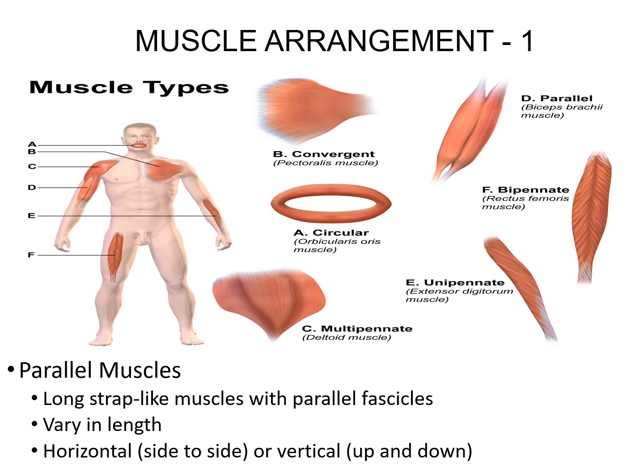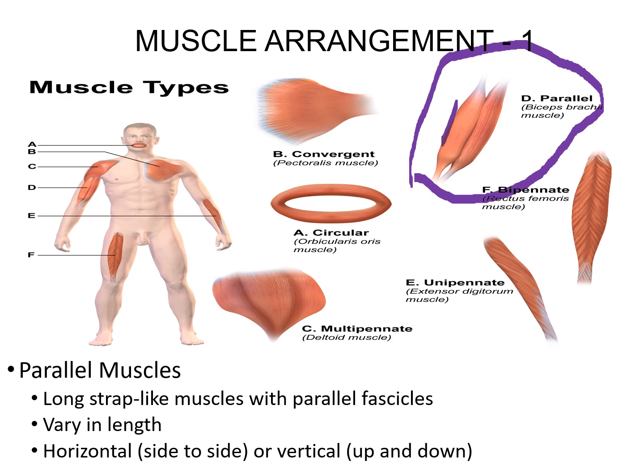We can classify muscles based on the overall shape, like the deltoid, or based on the arrangement of the fascicles and fibers. The parallel type of muscle arrangement is seen in your upper arm — a great example is your biceps brachii. The triceps brachii is also a parallel muscle. Basically you have a whole bunch of fascicles and fibers all running in the same parallel fashion.